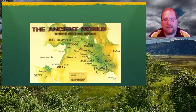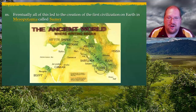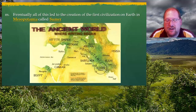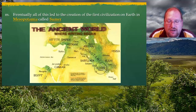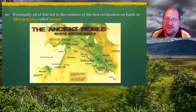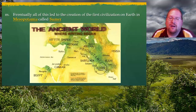Coming up next in our next lecture: eventually, all of this farming and domestication would lead up to the creation of the first civilization on Earth in the region known as Mesopotamia. This first civilization would also be known as Sumer, which you can see on the bottom right of the screen.